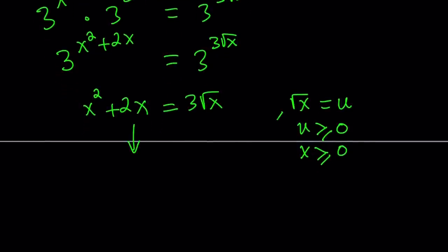If square root of x is u, then x must be u squared and x squared can be written as u to the fourth power. Just keep squaring both sides. Now we can replace x squared with u to the fourth power and x with u squared. So this becomes 2u squared, and 3 times the square root of x is just going to be 3u.